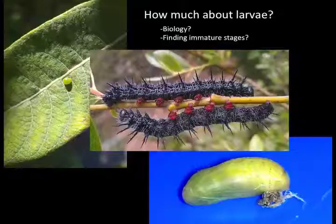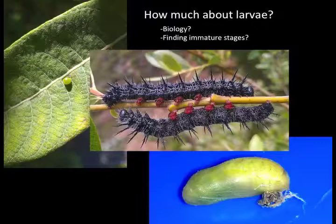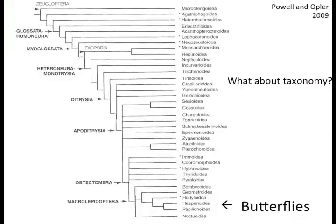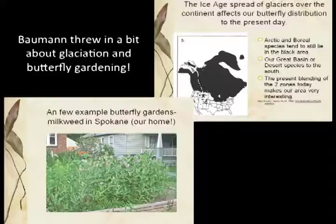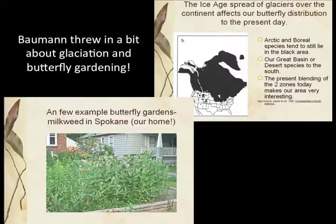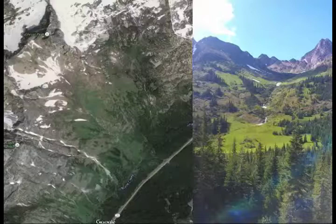How much do you want to include about plants — host plants, nectar sources? How much about larvae, given that adult butterflies are only one quarter of the life stages? Do you want to talk about how to find immature stages — eggs, caterpillars, or pupae? How much taxonomy? Do you want to overwhelm beginners with Latin? Do you want to demonstrate that butterflies are just colorful moths? John Bauman threw in material on glaciation and its effect on our region's fauna, and butterfly gardening. It depends on what the instructor knows and what both instructor and students want to take away.